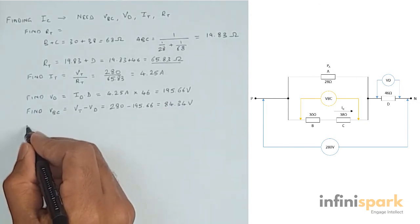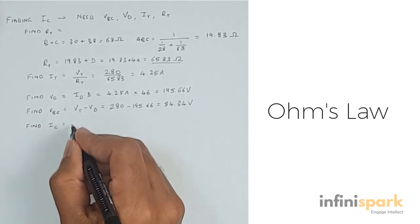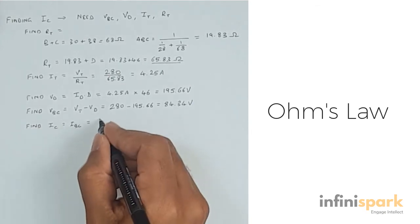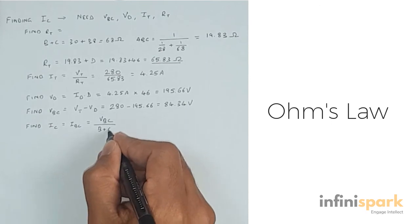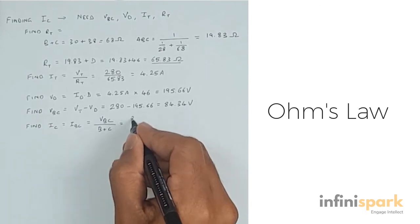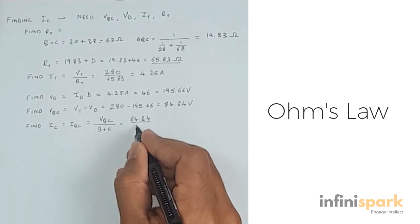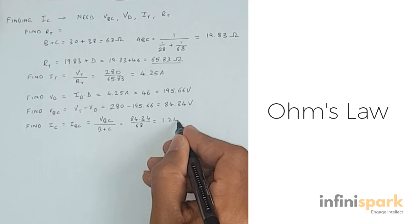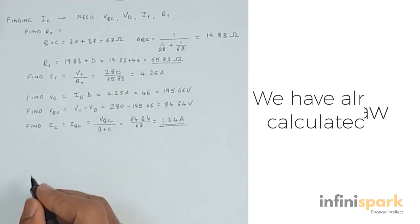And finally we can find IC, which is the same as IBC because B and C are in series. IC is equal to VBC divided by B and C together, which is 68 ohms. So we get 1.24 amps for IC.